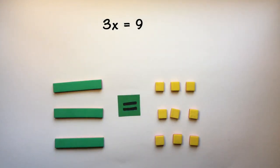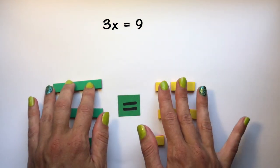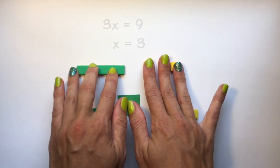Now one group, or 1x, is therefore equal to 3.